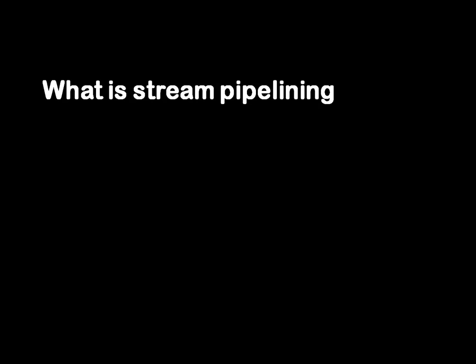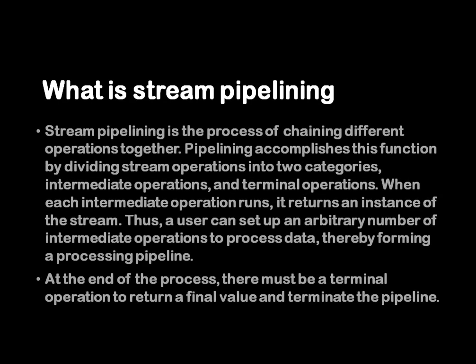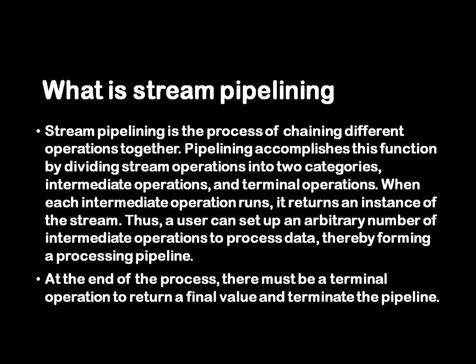What is stream pipelining? Stream pipelining is nothing but joining multiple intermediate operations. Intermediate operations won't give us a final result — if they are working on a stream they return another stream, so multiple intermediate operations can be chained. That is called stream pipelining. At the end we need a terminal operation. Intermediate operations are lazy and a terminal operation is needed at the end to invoke them.